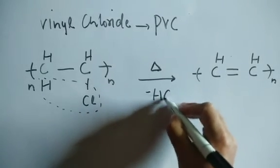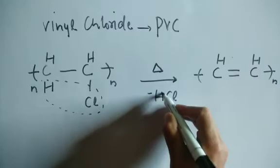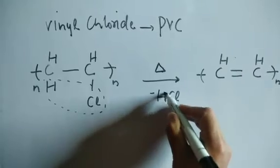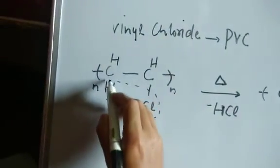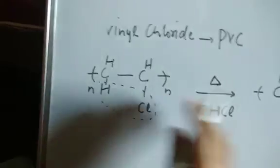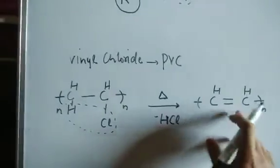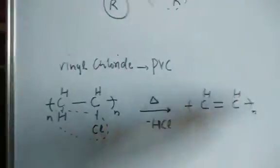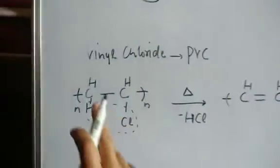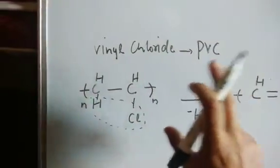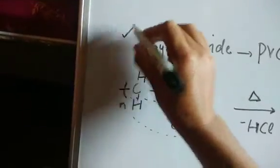Through the free radical process, one radical gets released, forming a polyene-type compound in the chain. This is how polyvinyl chloride (PVC) gets degraded.